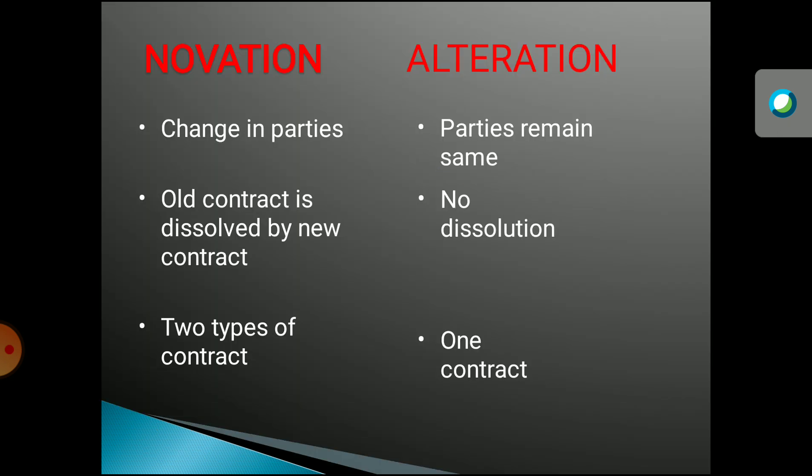The difference between novation and alteration: in novation, there is a change in parties, but in alteration the parties remain the same. In novation, in place of the old contract a new contract will come — the old contract is dissolved by a new contract. In alteration, no dissolution takes place. In novation, two types of contract are made, while in alteration only one contract is made between the parties.